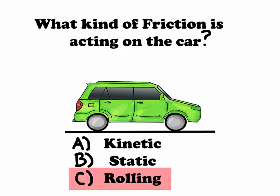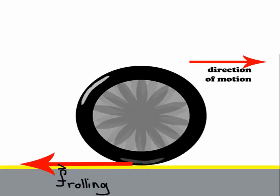The correct answer is rolling friction. Let's see why. The flattening of the tire due to its contact with the ground causes rolling friction. It slows down the car, so it's opposite the direction of motion.